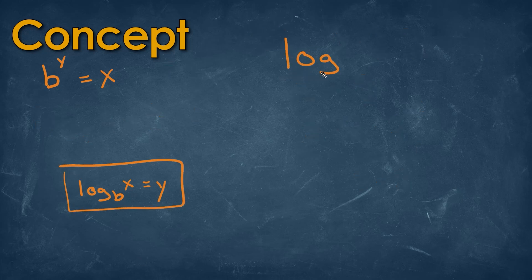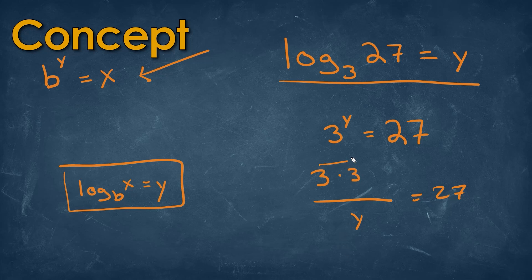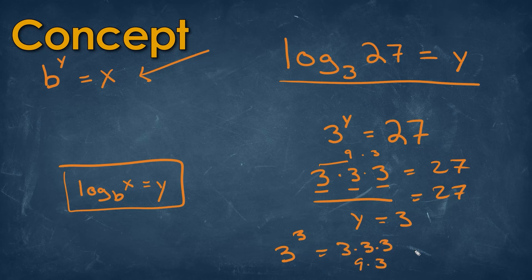Say we're given log base 3 of 27 is equal to y. It's hard to tell what it's asking, so it's easiest to convert it in terms of an exponent — meaning 3 multiplied y times gives us 27. How many times do we multiply 3 to get 27? We go 3 times 3, which gives 9, then 9 times 3 gives 27. So we multiplied three times, meaning y equals 3. We can spot check: 3 raised to the third power is 3 times 3 times 3, which is 9 times 3, equal to 27. So y is equal to 3.